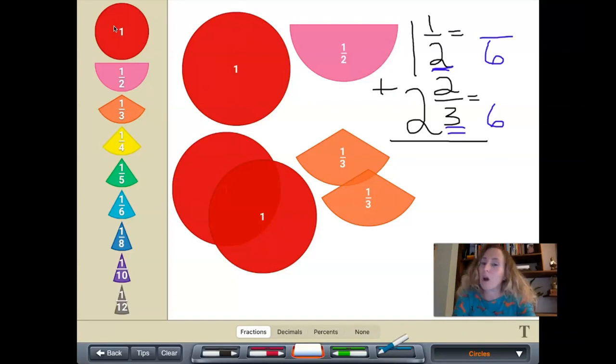Now, if you get stuck, you could always multiply the two denominators together. And in this case, actually, by multiplying them together, we are going to find our least common multiple, which in this problem is six.